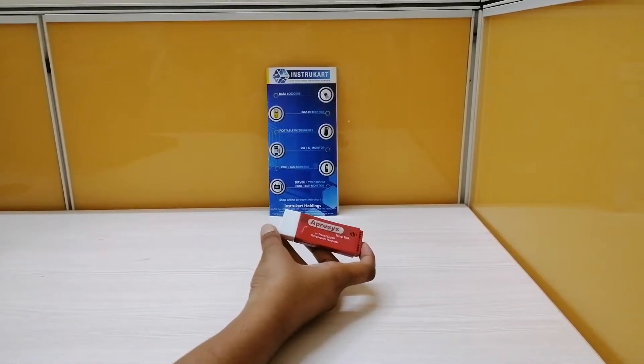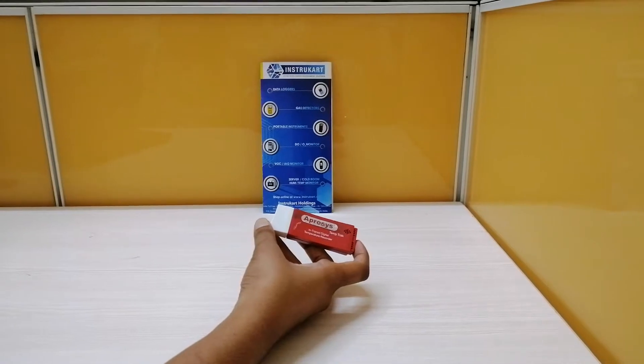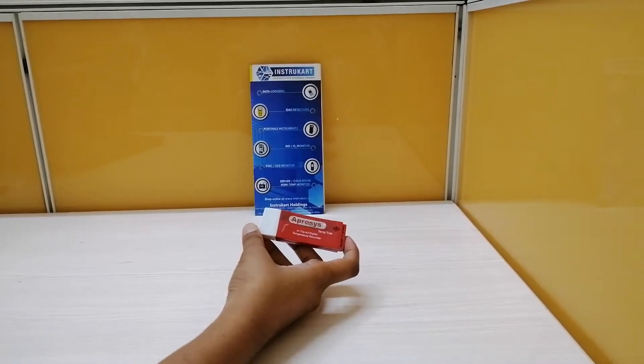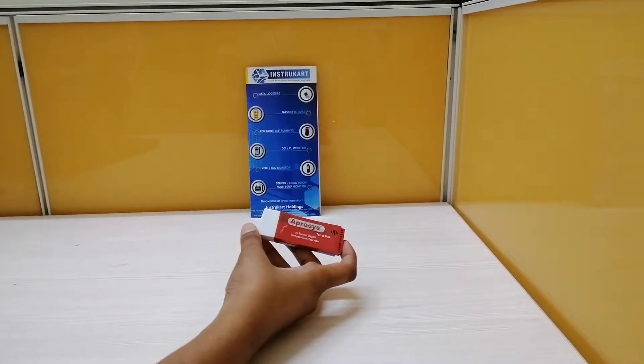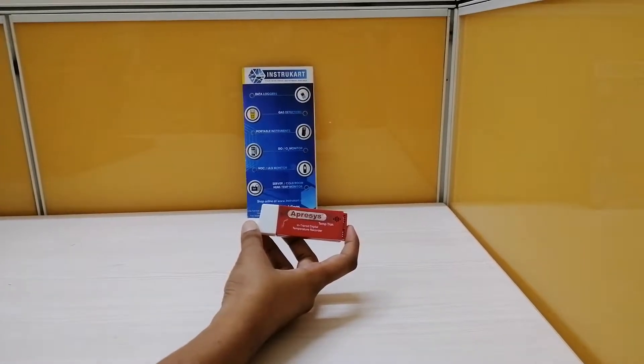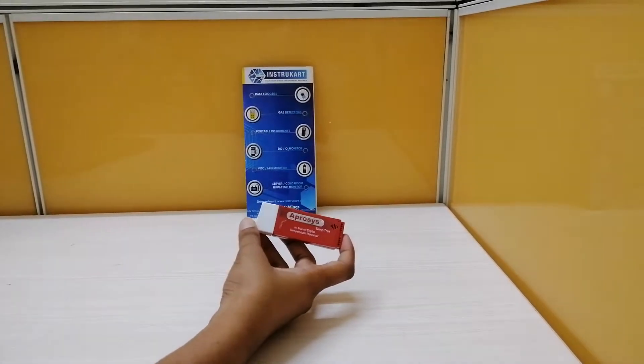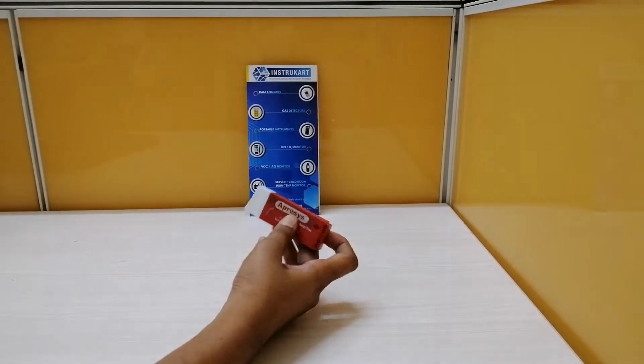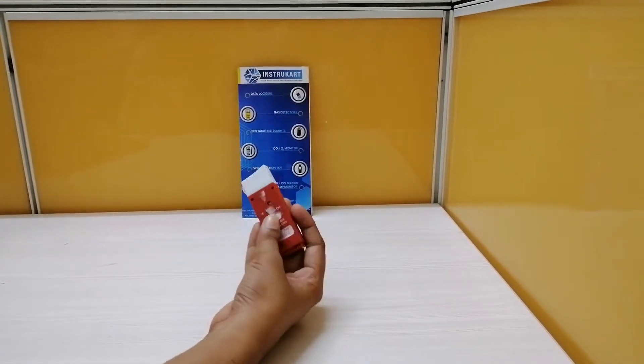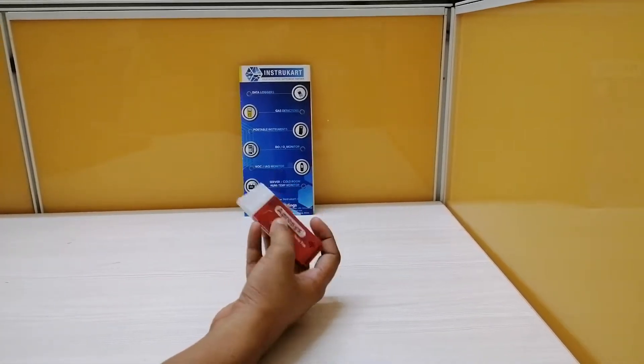If the maximum recording capacity is 25 days, the model is D25. If the recording is 50 days, it's D50. And if the recording capacity is 99 days, the model is D99. This is the 99-day capacity model, D99.